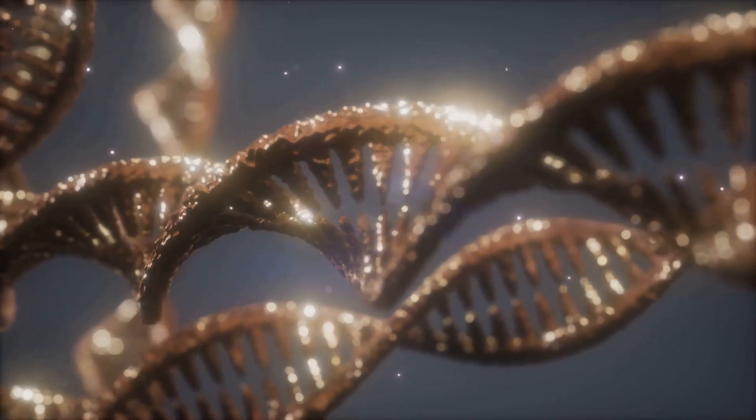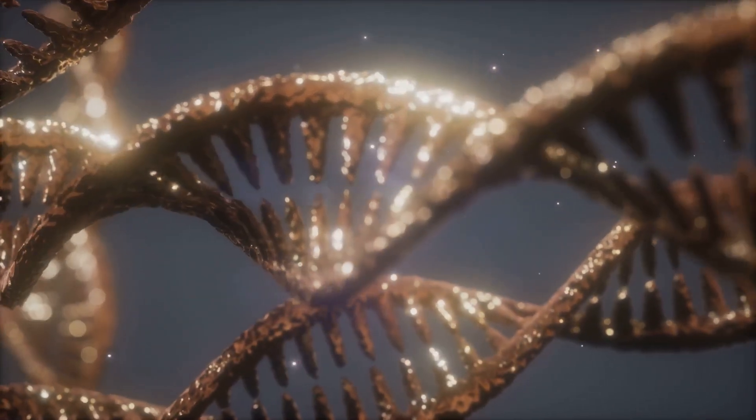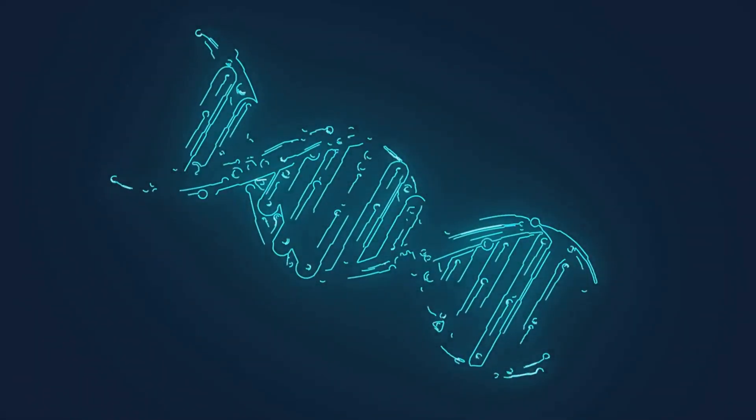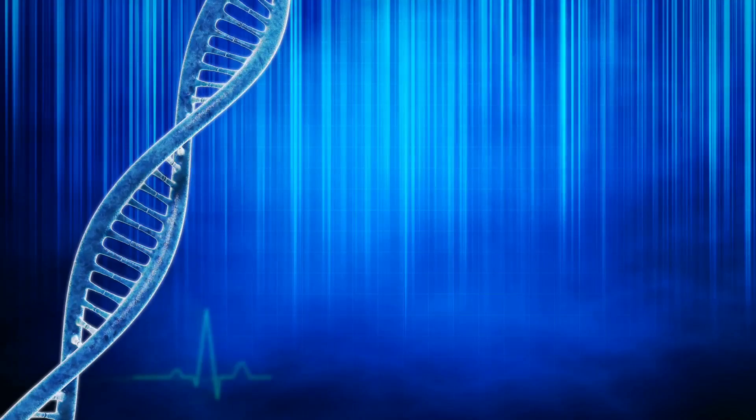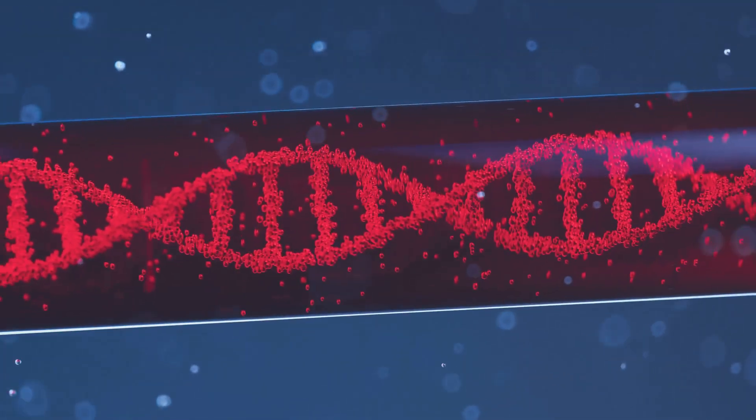The polypeptide chain folds into a specific shape, critical for function. Through transcription and translation, DNA is expressed as functional proteins. These proteins carry out most cellular work essential for life. It's a precise step-by-step assembly line.